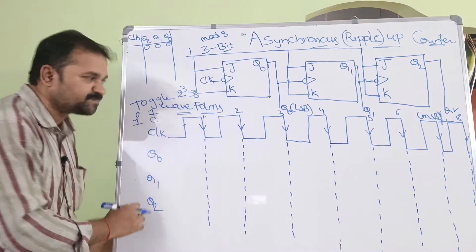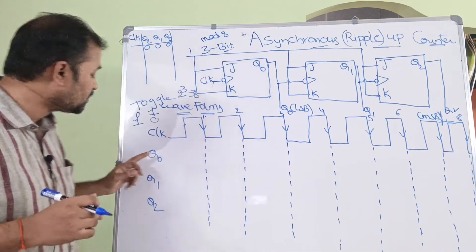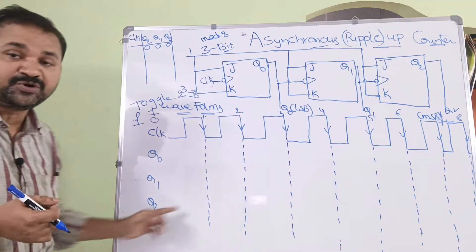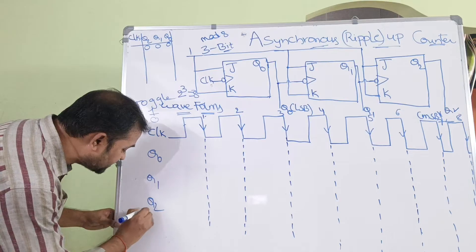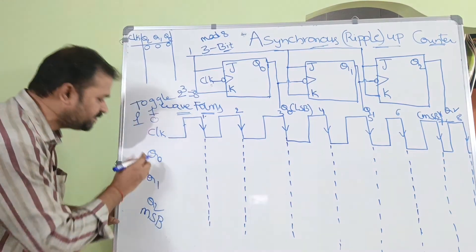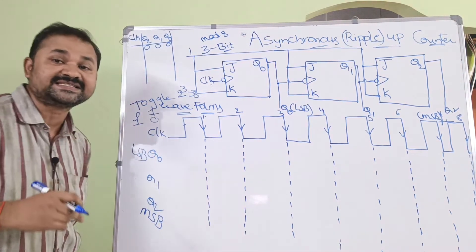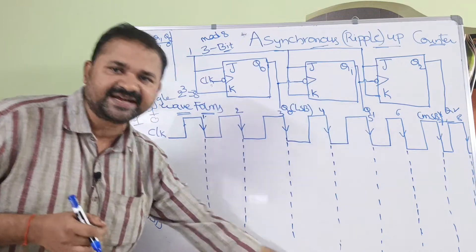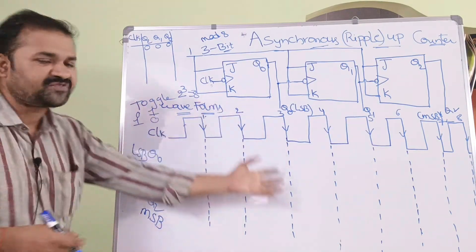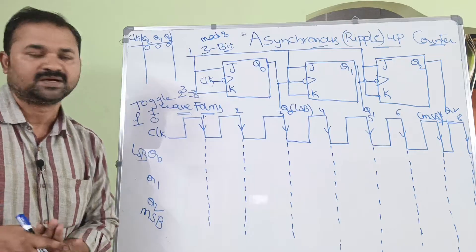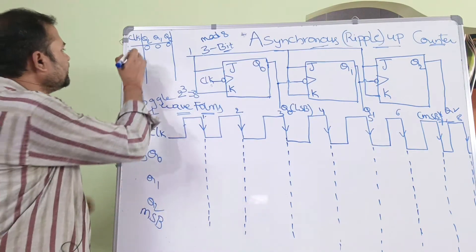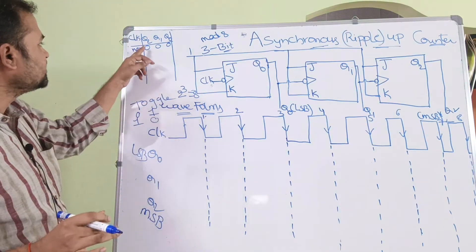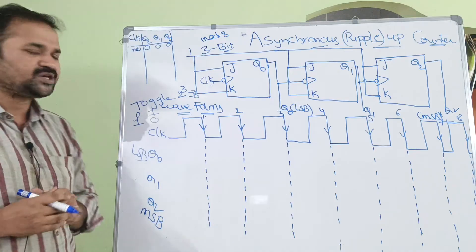The output of the first flip-flop is Q0, the output of the second flip-flop is Q1, and the output of the third flip-flop is Q2. Q2 is the most significant bit, whereas Q0 is the least significant bit. Initially this is the truth table, but due to space constraints it is written alongside the waveforms. After the waveforms we have to draw the truth table.